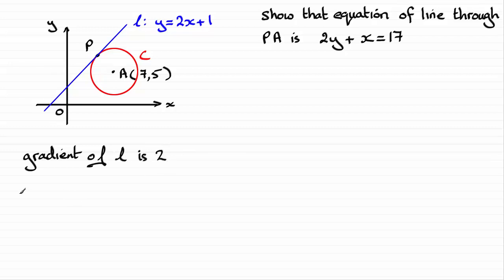So that leads on to the perpendicular gradient which will be the gradient of PA. And that's going to be the negative reciprocal of this. The reciprocal of 2 is 1 over 2 and then just put the negative sign in front. So a gradient then of that line minus a half.